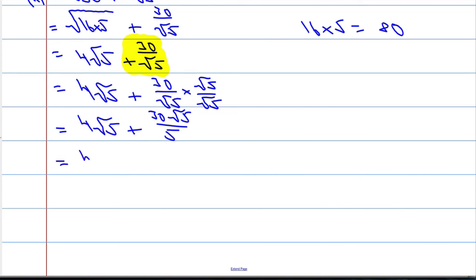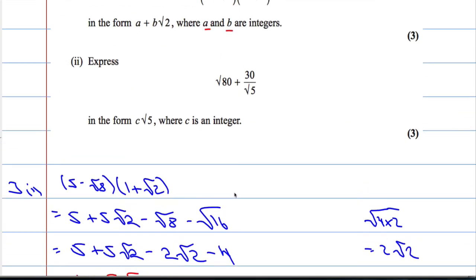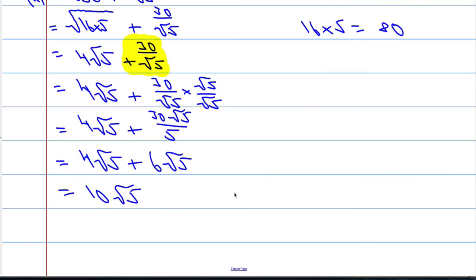Which equals, so we've got 4√5 plus, and the 5 can cancel into the 30 six times, so we get 6√5. 4√5 plus 6√5 is 10√5. I don't think we're going to get any further with that. c times √5, where c is an integer. Absolutely brilliant.